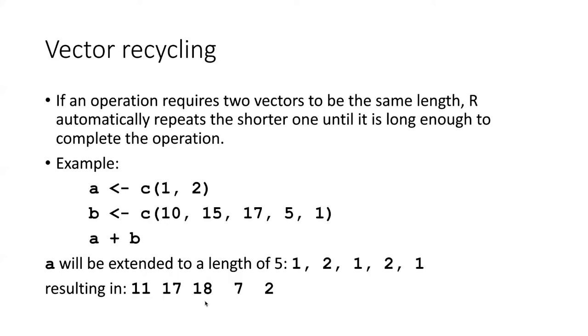One of the topics that I have sort of glossed over is what happens if you try to perform a vector operation on two vectors that are not the same length. R has a behavior which some people call vector recycling. What this means is that if you are performing an operation on two vectors that are supposed to be the same length but they're not, then R will automatically repeat the shorter one until it's long enough to complete the operation.